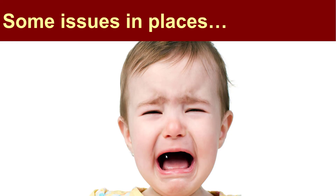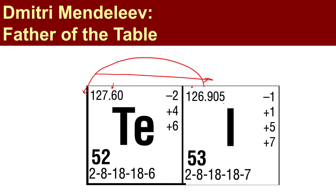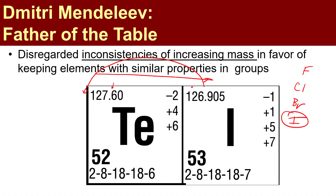Things weren't 100% rosy all the time using the Mendeleev model. There were some discrepancies. For example, tellurium and iodine were next to one another. If we proceed from left to right on the Mendeleev table, tellurium has a higher atomic mass than iodine and technically they should be flipped. But if we put iodine in group 16, that would be a problem because iodine had chemical properties similar to fluorine, chlorine, and bromine — not the same properties as oxygen, sulfur, or selenium. So they kept the table as it was and disregarded the inconsistencies of mass in favor of the idea that elements with similar properties should remain in columns, or as we call them, groups.